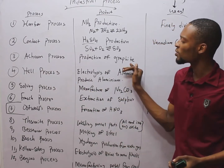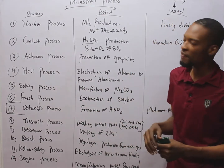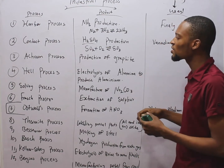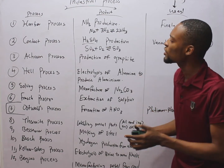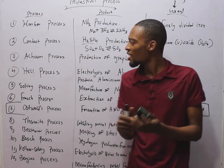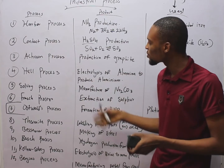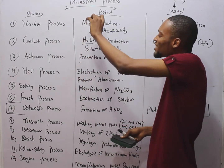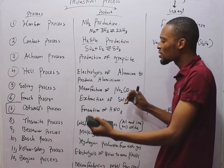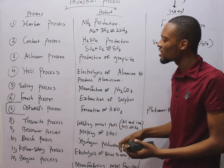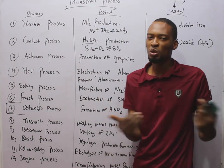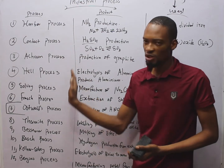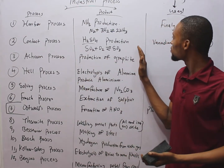The Acheson process is used in the production of graphite. There is no catalyst used in the Acheson process. To produce graphite in industry, you use the Acheson process. Note that all these processes require detailed steps which will be treated in other topics, but for now you just need to know the industrial processes, what they are used to produce, and the catalyst used if applicable.